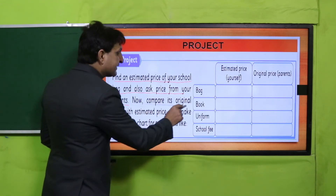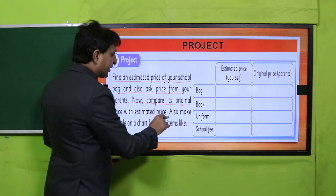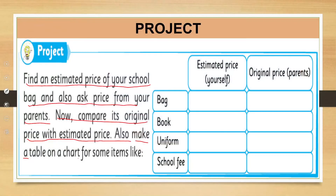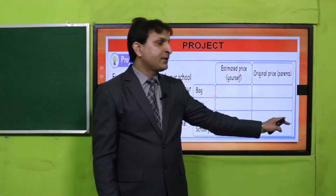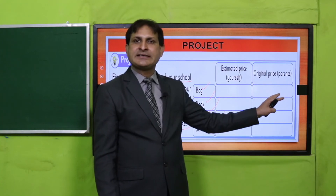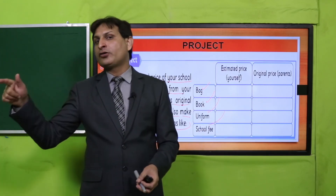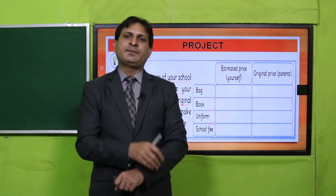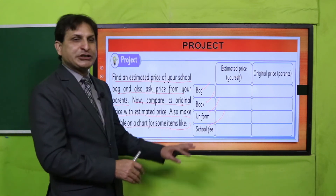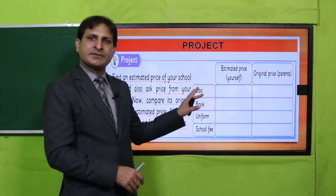اب compare its original price with estimated price۔ Also make a table on a chart for some items like: bag, book, uniform, and school fee۔ یہ ساری کے ساری آپ نے estimate کرنا ہے اور پھر parents سے original prices discuss کرنے کے بعد وہاں write کر دینی ہے۔ آپ کی estimation اور original prices میں کیا difference ہے وہ آپ دیکھیں گے۔ یہ project complete کر کے اپنے teacher کو submit کروا دیجئے گا۔